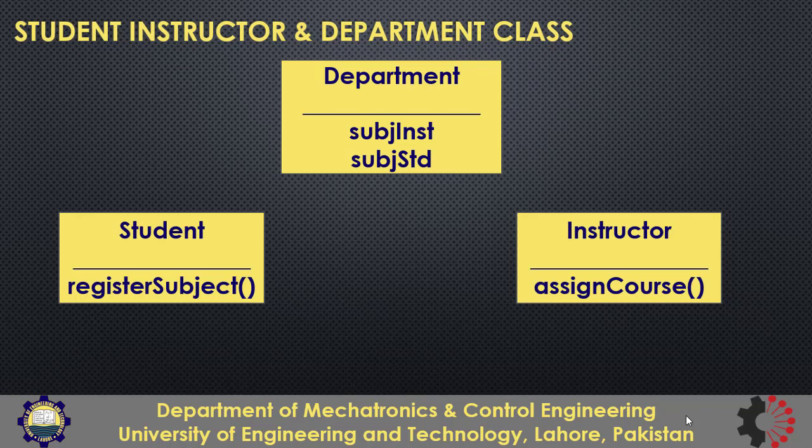Both will be dictionaries. In subject_instructor, the keys will be the subject and values will be the list of instructors teaching that course. Likewise in the subject_student dictionary, keys will be the subjects and values will be the list of students registered in that subject. When registerSubject is called on a student object, that should update the subject_student dictionary of the department class. And likewise when assignCourse is called on the instructor, that should update the subject_instructor dictionary inside the department class.